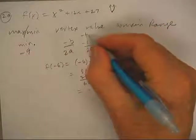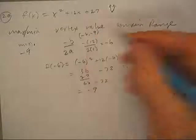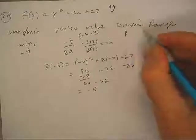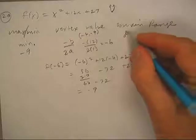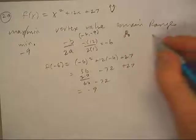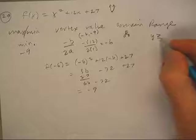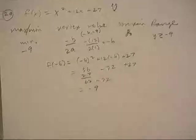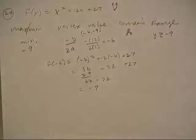The vertex was negative 6 and negative 9. The domain's all the real numbers, and the range is y is greater than or equal to negative 9. And we're good on that one, and we'll return.